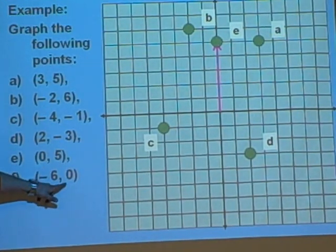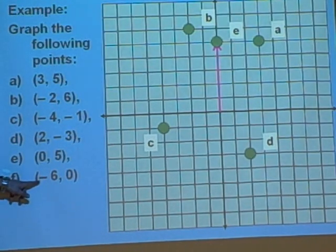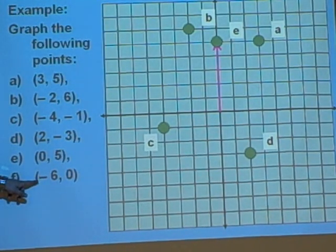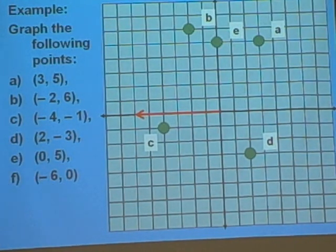When the y-value is zero, it's going to be on the x-axis. Negative six comma zero means we're going to start off at the origin. We're going to go six to the left, and then we're not going to go up or down at all. We stay right there and put the point there.